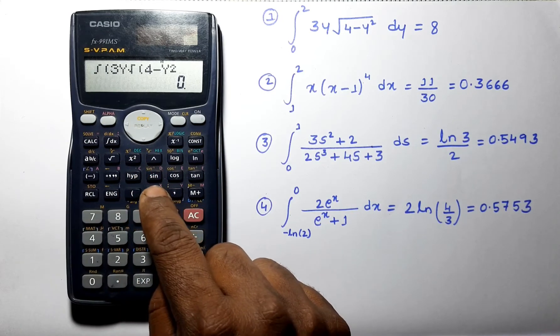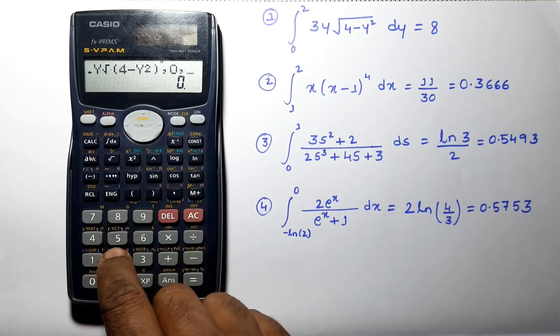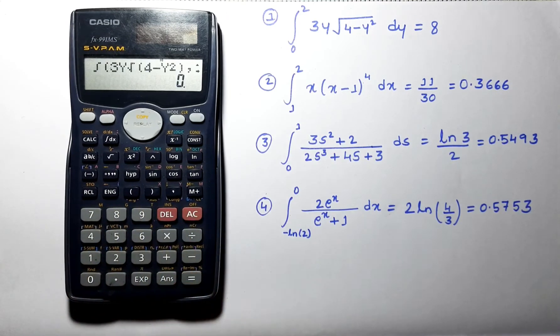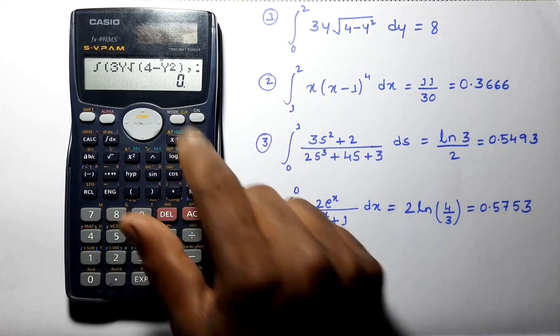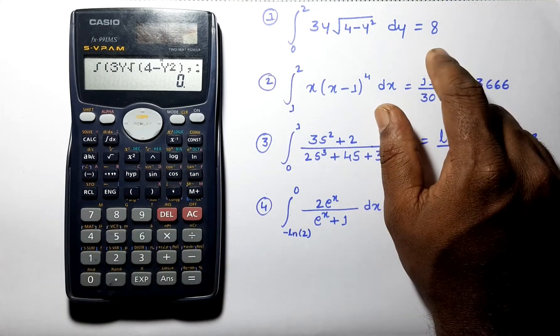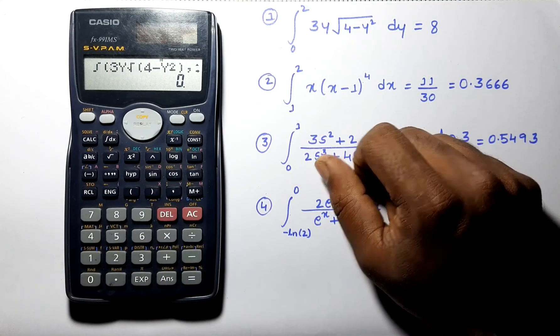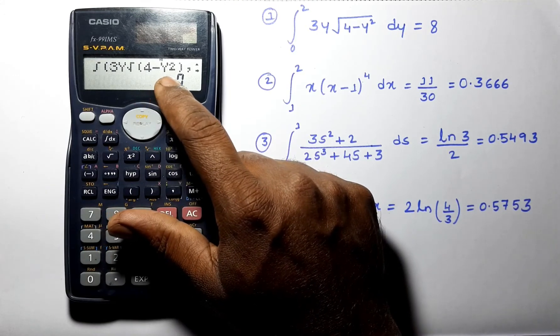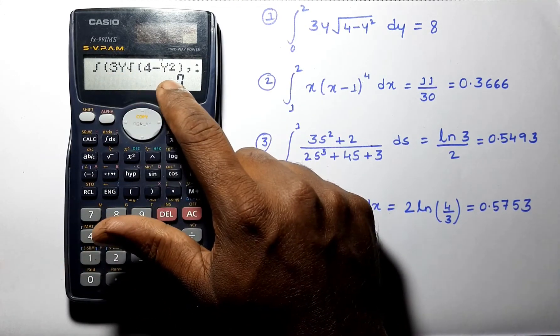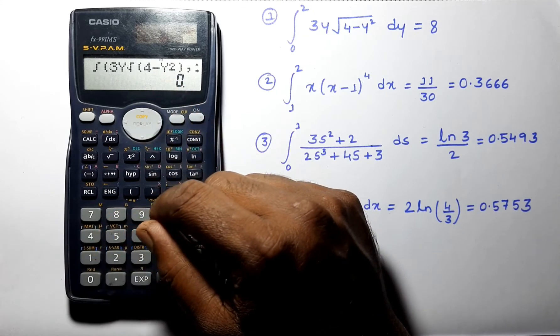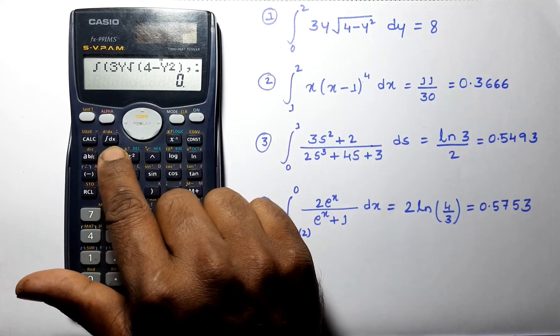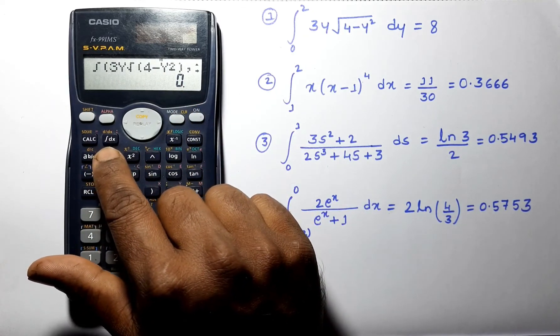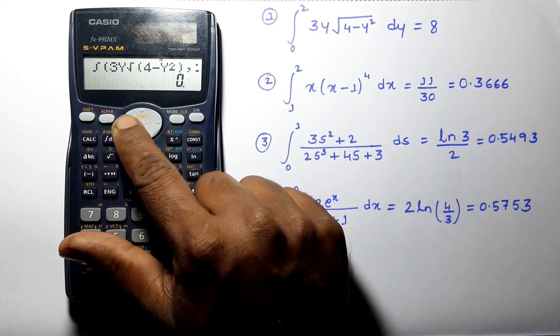Close the bracket and put the limits as 0, 2. You can see it's showing 0 but our answer is 8. We have made a mistake - we selected the variable as y here. We cannot do that because by default it is integrating with respect to x. You can see here the symbol dx.